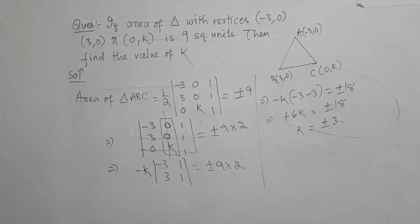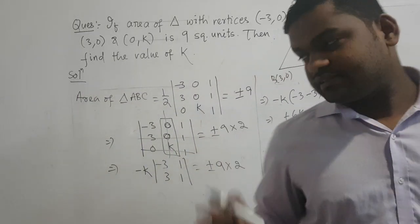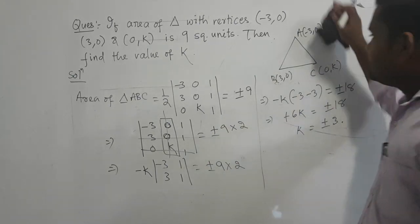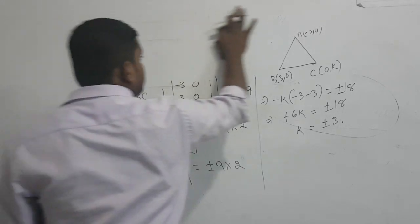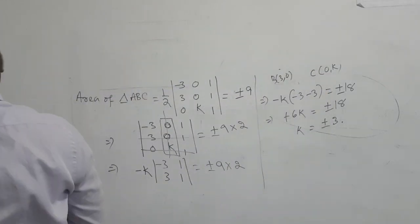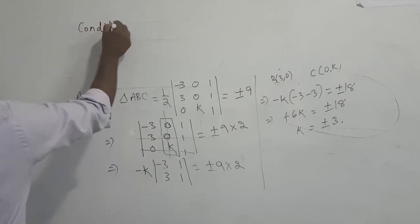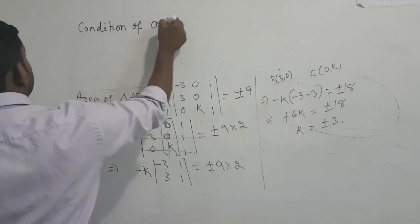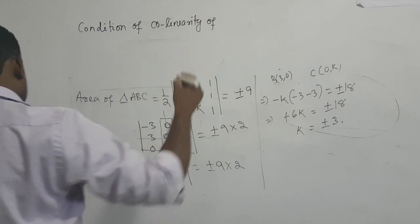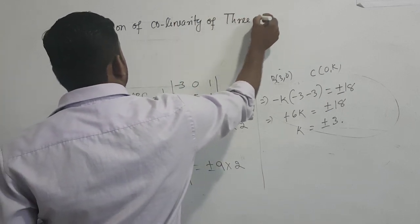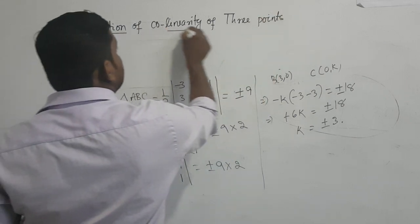So the determinant is useful for the area of a triangle. Next topic: the condition of collinearity of 3 points.